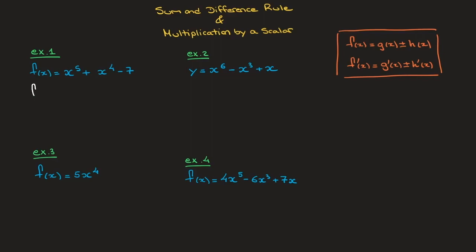So f'(x) is equal to the derivative of x to the power of 5, which would be 5 times x to the power of 4, plus the derivative of x to the power of 4, which is 4 times x to the power of 3, minus the derivative of 7. But since 7 is a constant — just a number — its derivative is equal to 0. So our final answer is f'(x) equals 5x to the power of 4 plus 4x cubed.